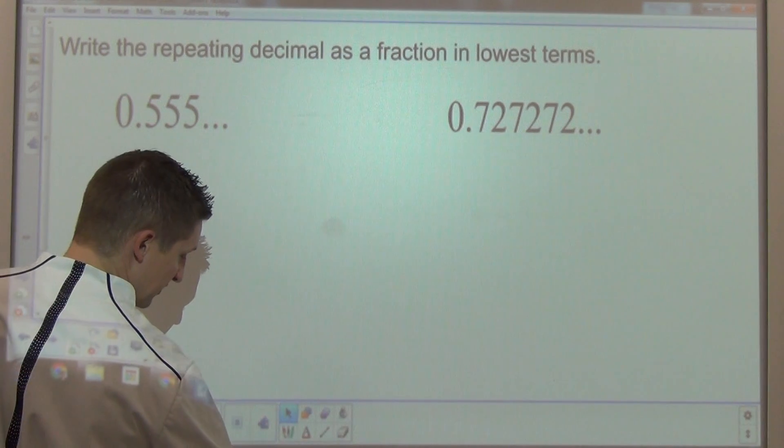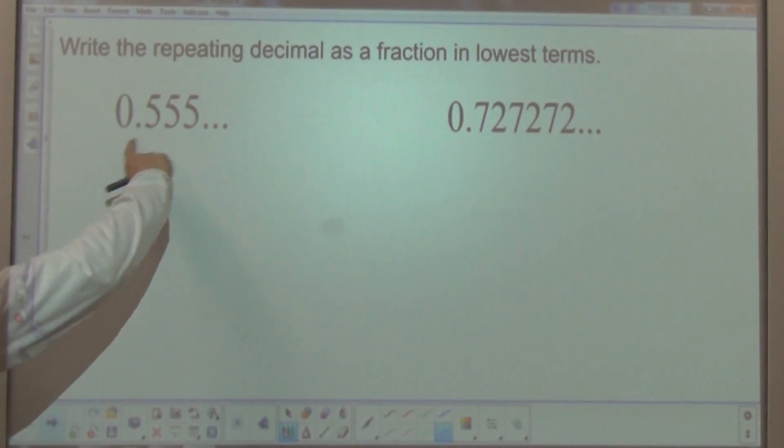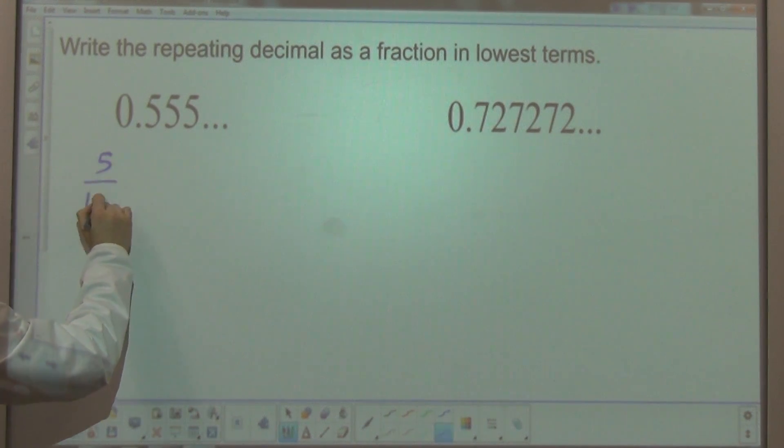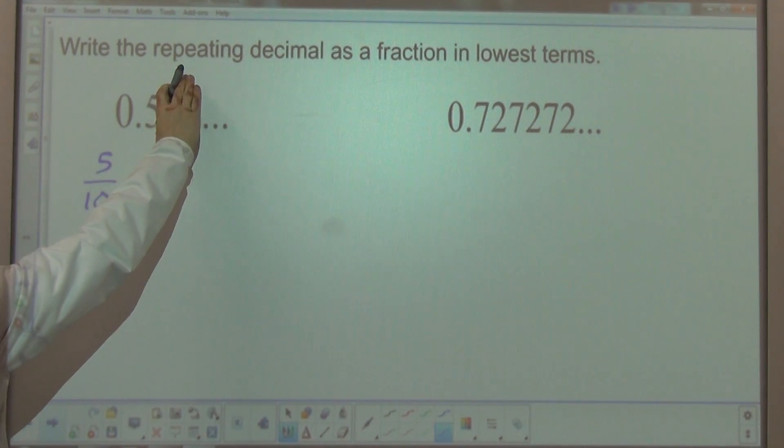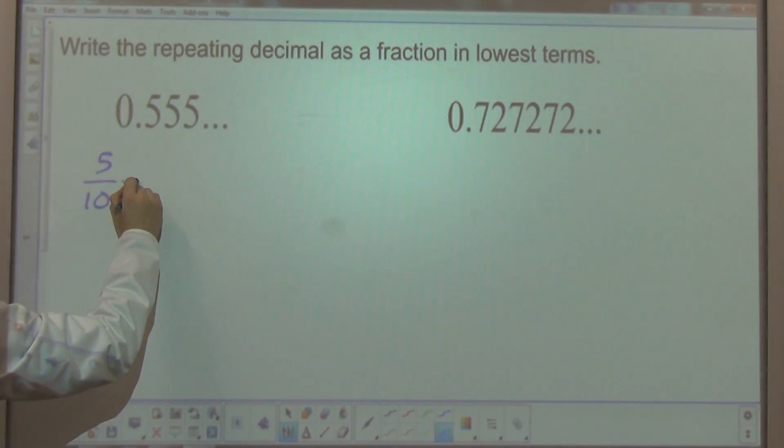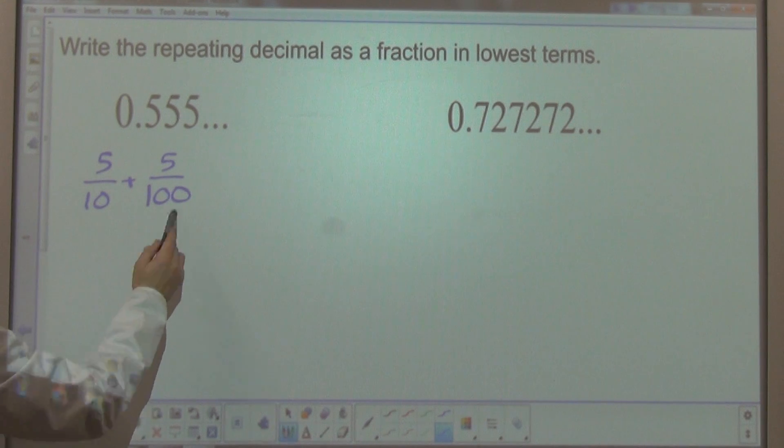Here's how I do that. As I look at this term, 0.5 repeating, I'm going to rewrite this as a series of fractions that are added together. So 0.5, just that part, would be 5 tenths. And then I'm going to add the next place, which would be 5 hundredths. So 5 tenths plus 5 hundredths would be this expression right there.